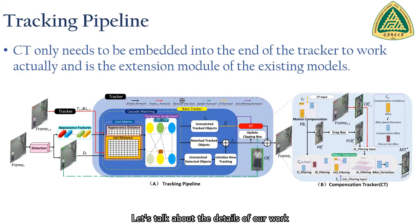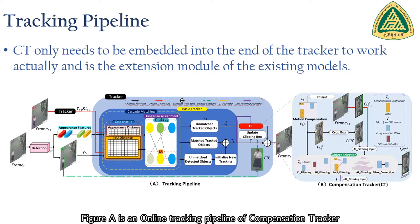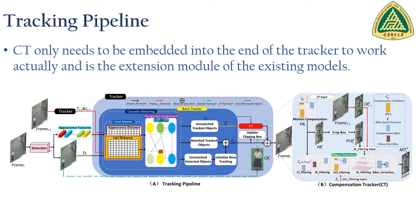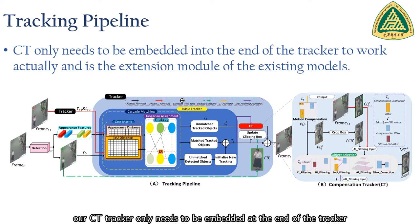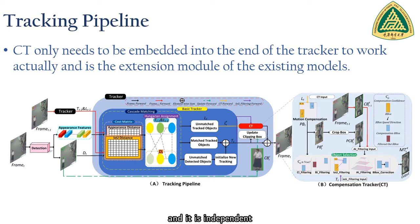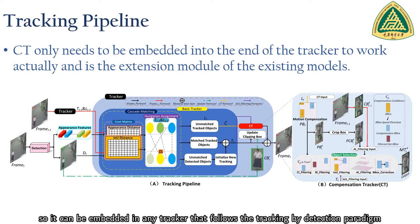Let's talk about the details of our work. Figure A is an online tracking pipeline of the compensation tracker. As can be seen from the flow chart, our CT tracker is designed to be embedded at the end of the tracker and is independent, so it can be embedded in any tracker that follows the tracking-by-detection paradigm.